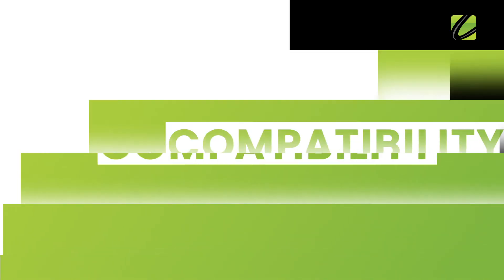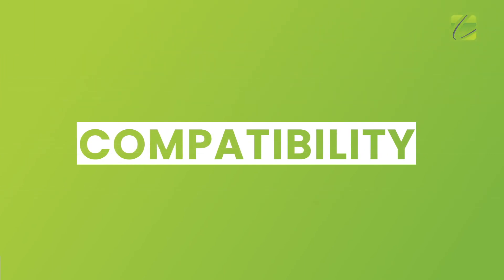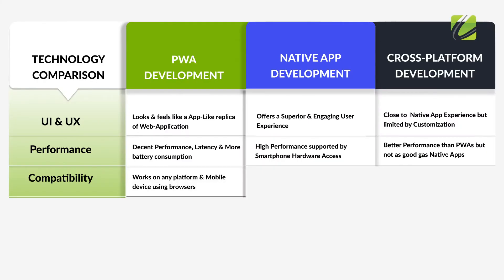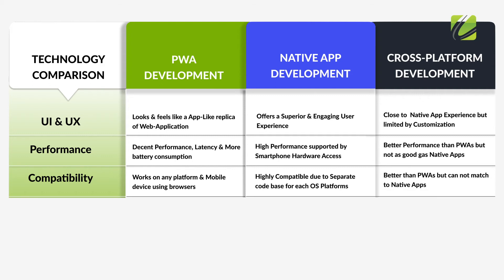Moving on to the third parameter: compatibility. PWAs work on any platform and mobile device using browsers. Native apps have a separate code base for Android, iOS, or Windows, which ensures the highest level of OS compatibility. Cross-platform apps have a single code base that works across Android, iOS, and Windows — compatibility is better than PWAs but cannot match the native approach.